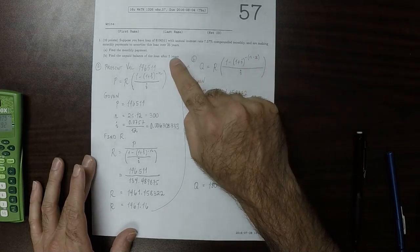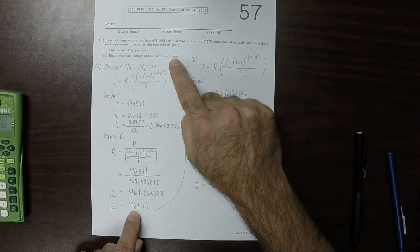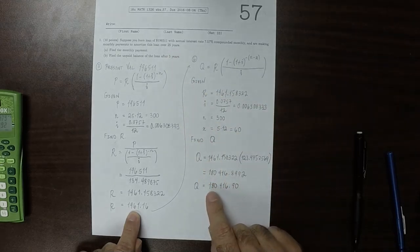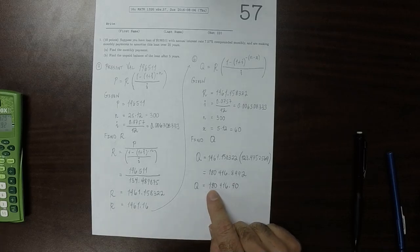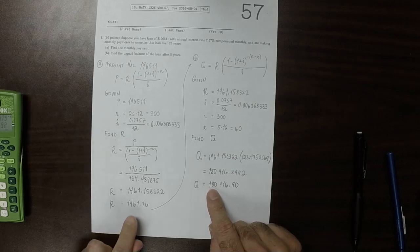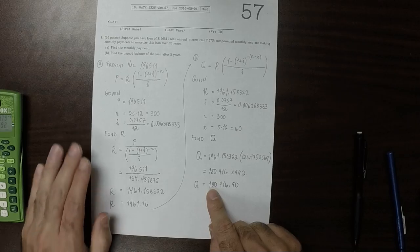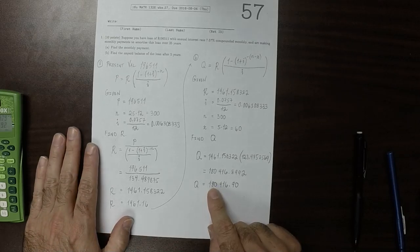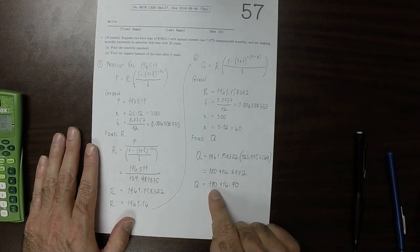And after five years of paying $1,500 a month, more or less, the principal unpaid is $180,000. So after making 60 payments of $1,500, after paying $90,000, only $16,000 of it has applied to the principal.